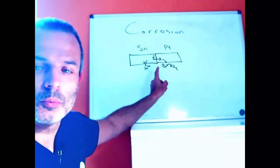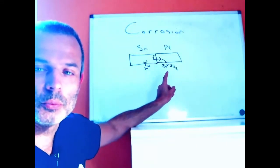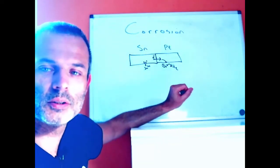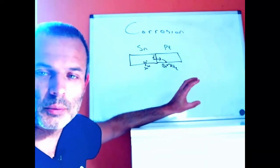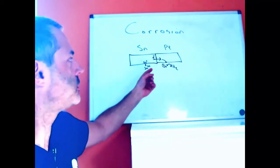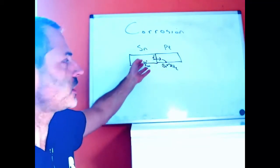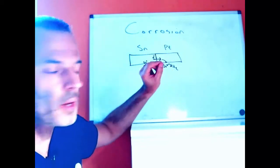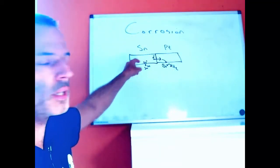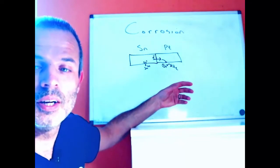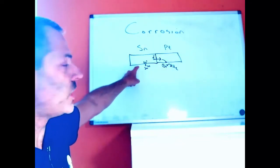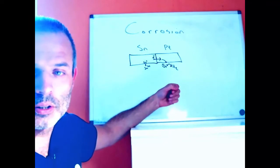Our first type of corrosion: if we take a piece of tin and throw it into some acid, very little happens because the tin can't dissolve if it can't donate its electrons to anything. A small amount of tin dissolves into the water, then the metal becomes negatively charged, and then it's too negatively charged for any more tin to be oxidized.